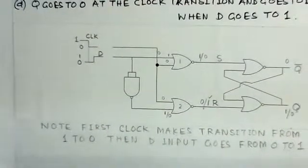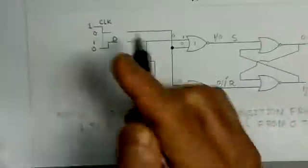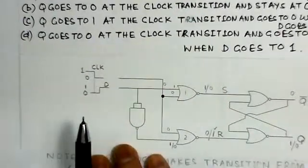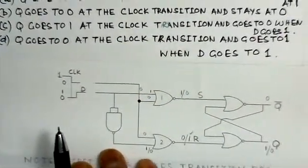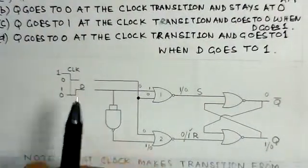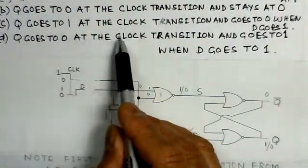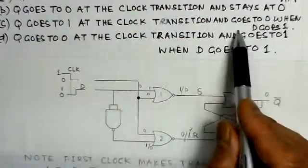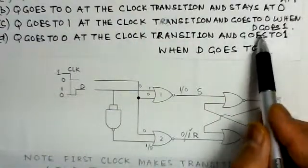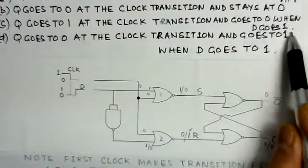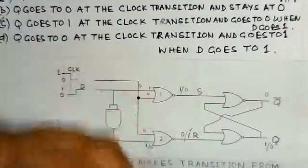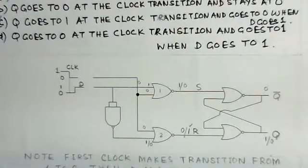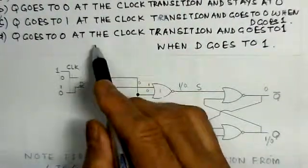Looking at the options, option C states that Q goes to 1 at the clock transition and then goes to 0 when D goes to 1. This matches our analysis exactly — first the flip-flop is set (Q=1), and then it is reset (Q=0). So option C is the correct answer.